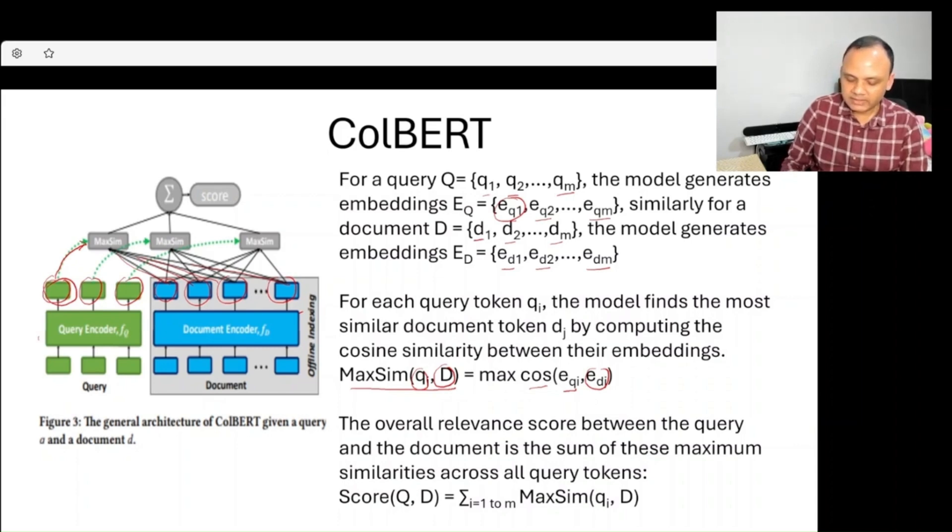It interacts with each individual document token, finds out which document is giving the maximum cosine similarity, and considers that. The same thing happens for each individual query token.